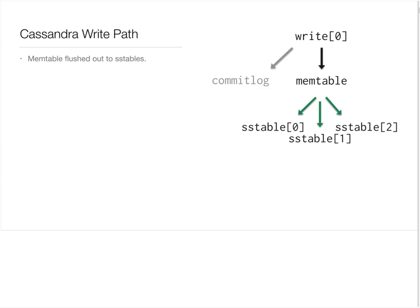Each SSTable is immutable — it cannot be changed once it's created. You might notice that as your node lives, you get more and more SSTables. That's true, and the number of these SSTables is reduced through a process called compaction. So that is the basic gist of how writes come into Cassandra.